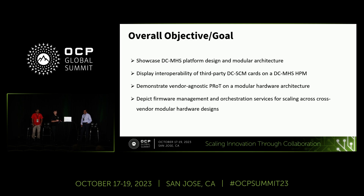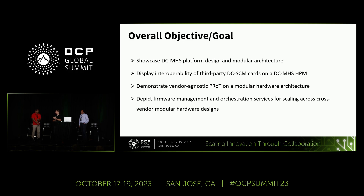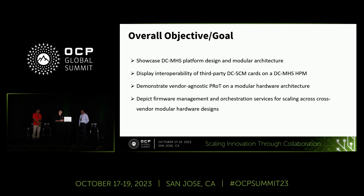Our overall objective here was to showcase the DCMHS platform design and architecture, demonstrate interoperability between components, and show how different firmware can be brought on across that modular architecture. In this case, we brought on the platform root of trust from AMI on an AST 1060 root of trust solution. We're also going to demonstrate vendor-agnostic platform root of trust. Madan will take us through the platform root of trust solution, its capabilities, and how they were able to bring that onto the hardware. We'll also depict firmware management orchestration services for scaling cross-vendor modular hardware.